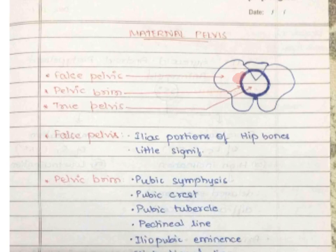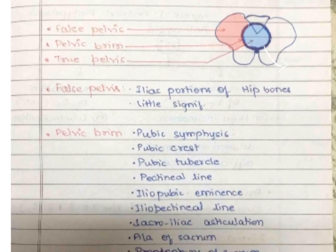Only the iliac part of the hip bones forms the false pelvis, while the true pelvis forms the birth canal. The pelvic brim lies between these two. The pelvic brim is bounded by: the pubic symphysis, pubic crest, pubic tubercle, pectineal line, iliopubic eminence, iliopectineal line, sacroiliac articulation, ala of the sacrum, and finally the promontory of the sacrum.